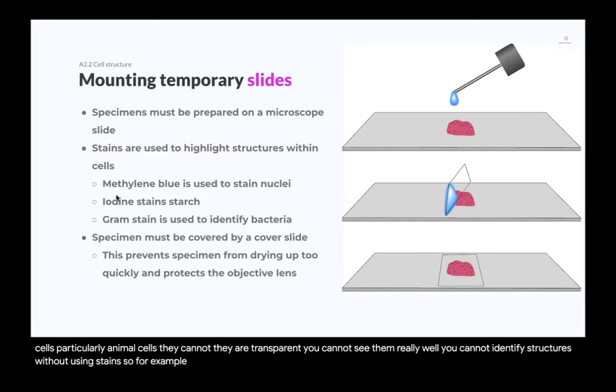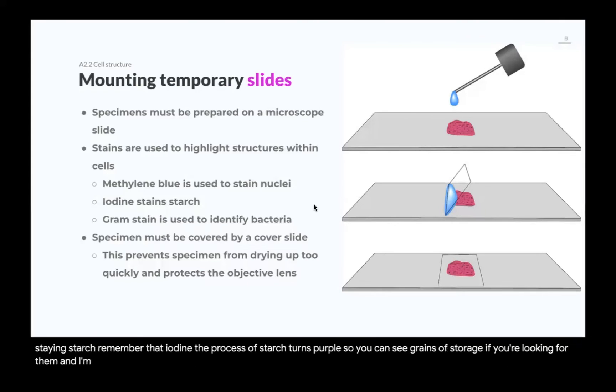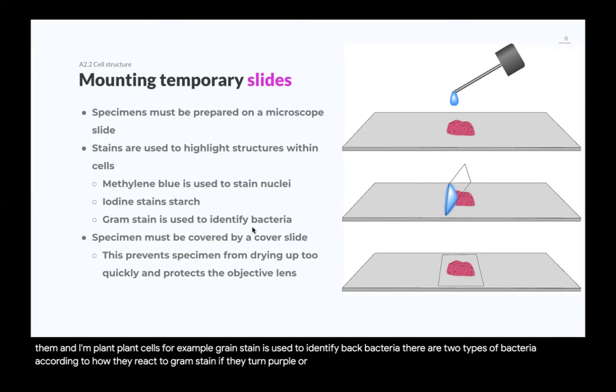For example, methylene blue is used to stain nuclei. That's very good for animal cells. For example, iodine stains starch. Remember that iodine, the presence of starch, turns purple. So you can see grains of starch if you're looking for them in plant cells, for example. Gram stain is used to identify bacteria. There are two types of bacteria according to how they react to gram stain. If they turn purple or pink, and that has clinical implications and diagnostic implications.